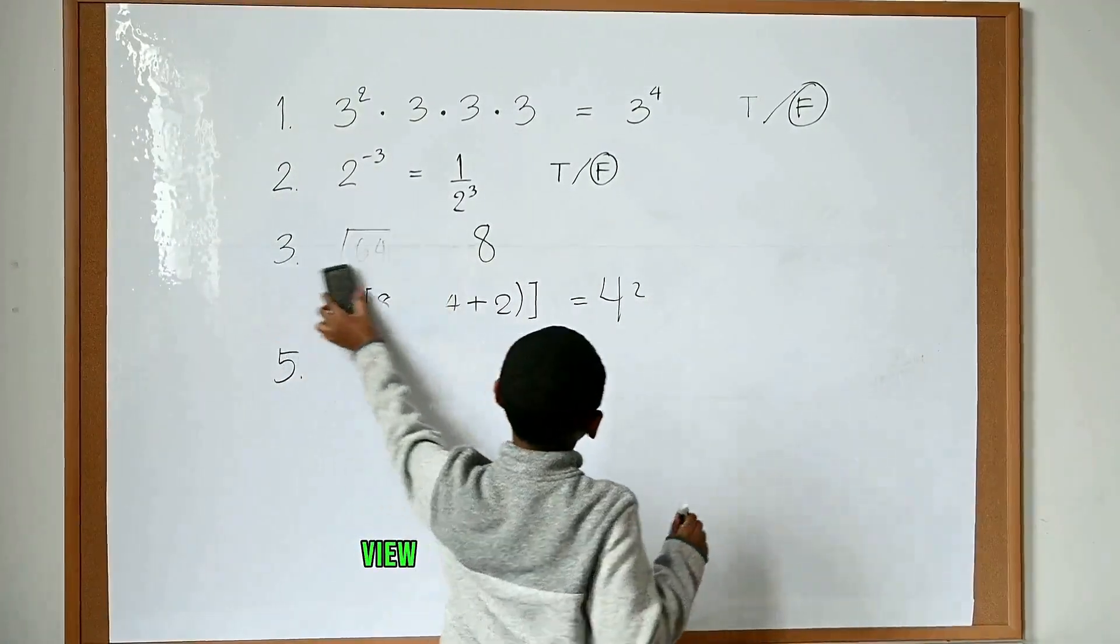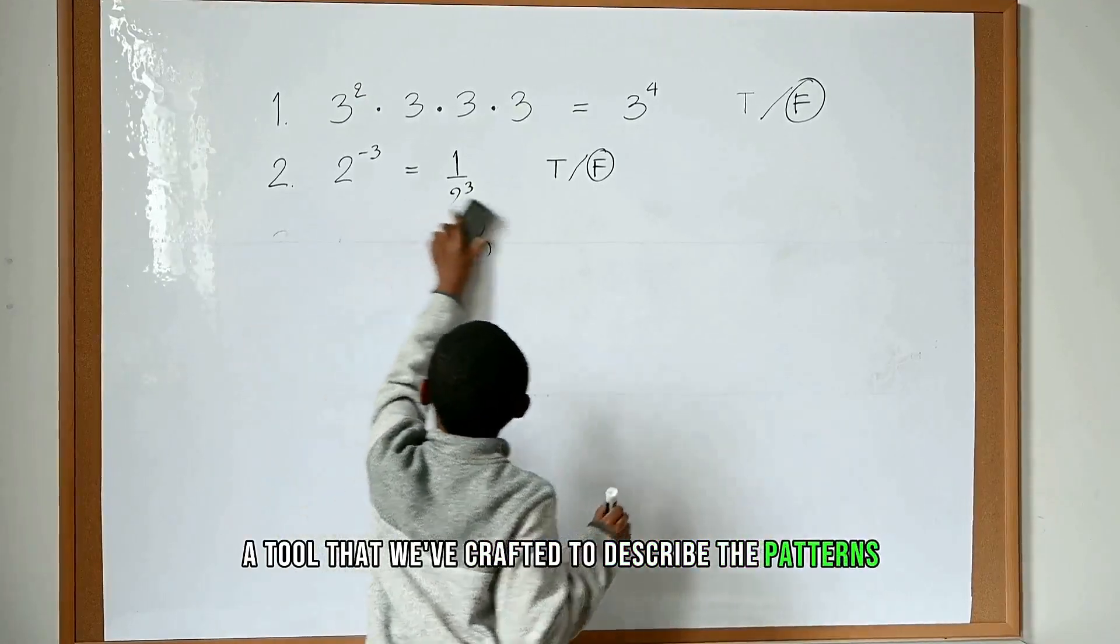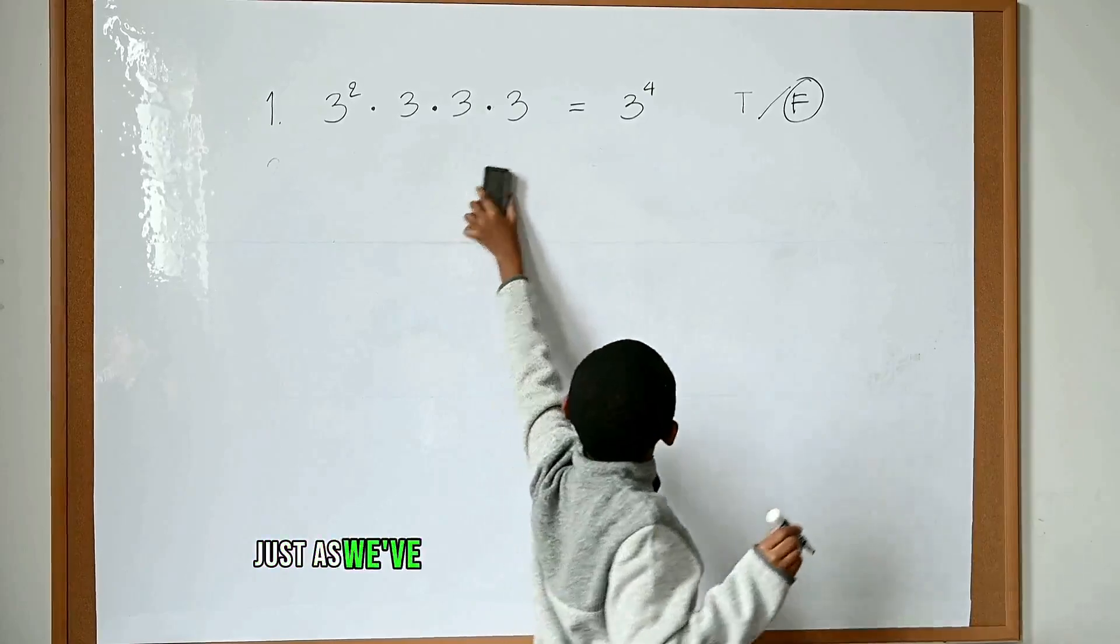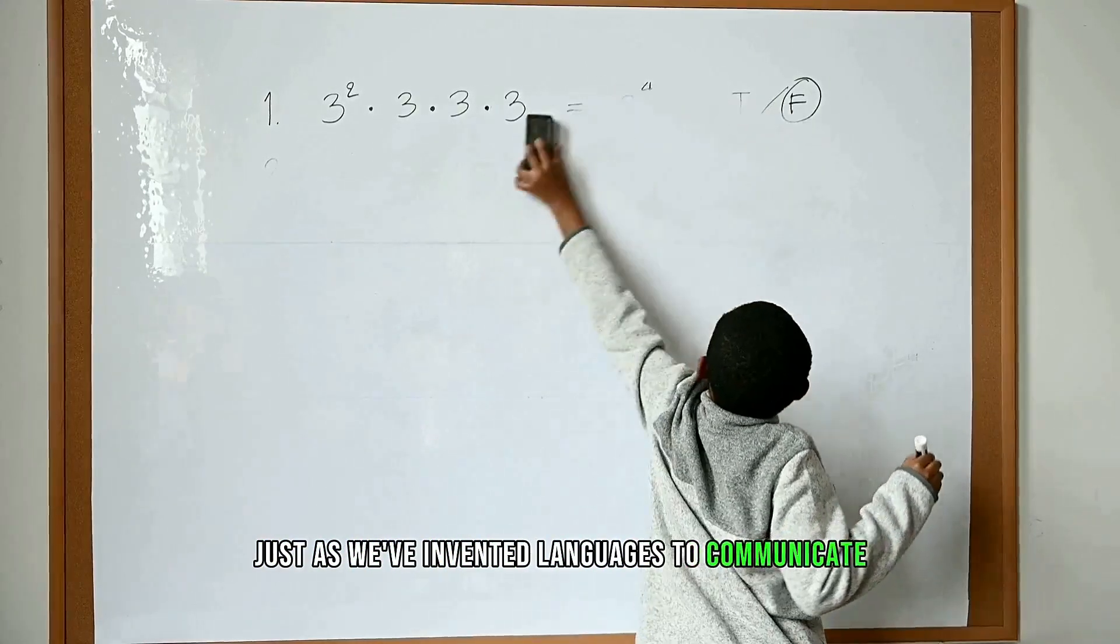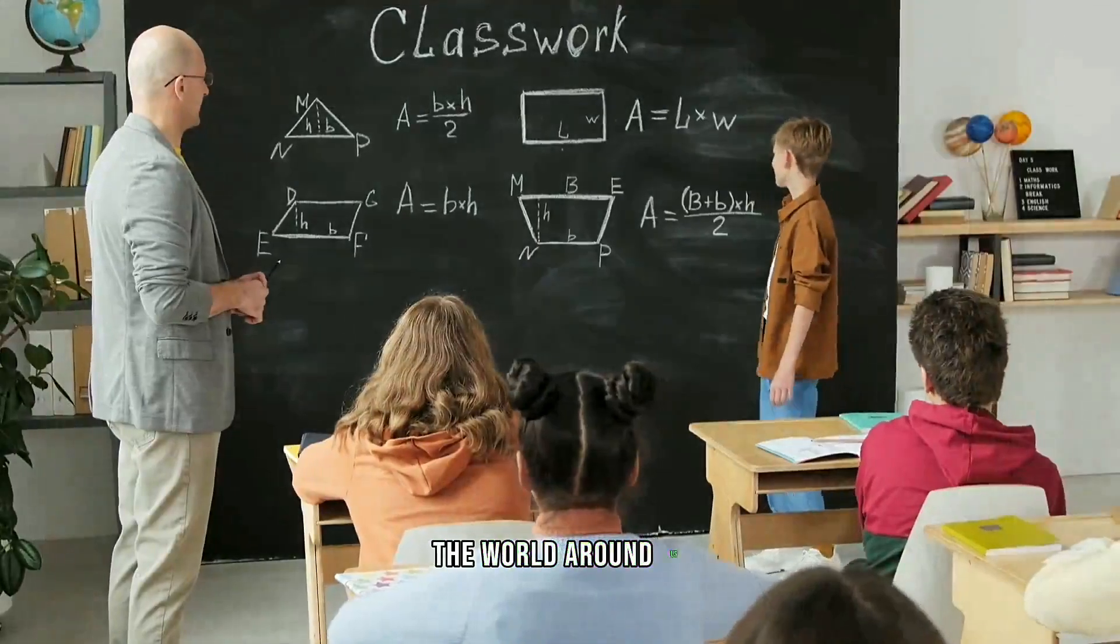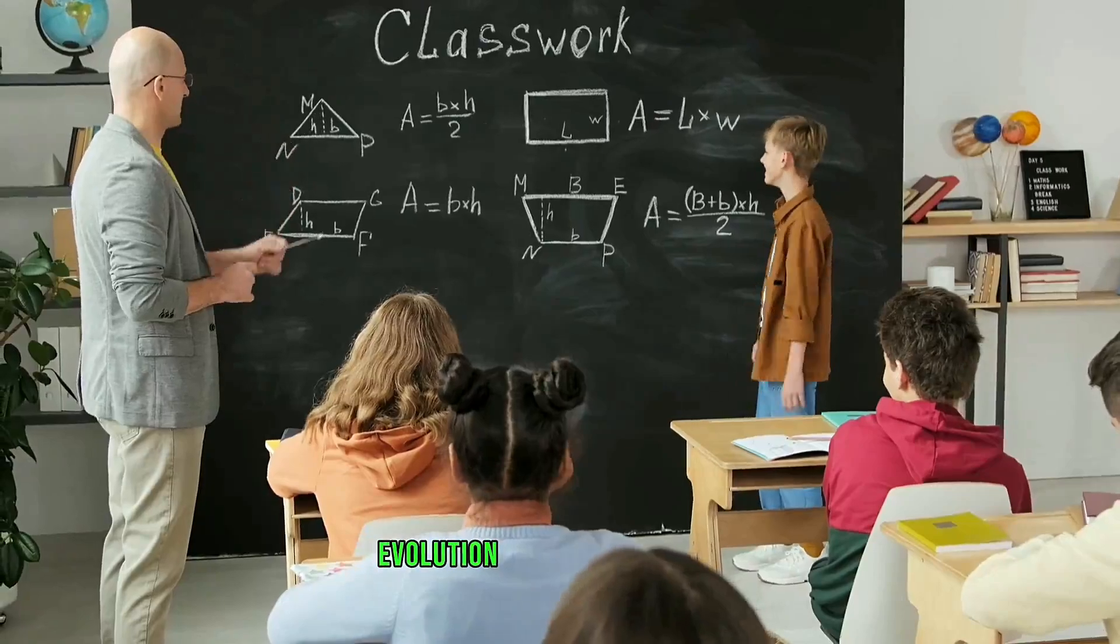Advocates of this perspective view mathematics as a language, a tool that we've crafted to describe the patterns and phenomena we observe in the universe. They argue that just as we've invented languages to communicate, we've invented mathematics to quantify and make sense of the world around us. But like any language, it's subject to change, evolution, and interpretation.